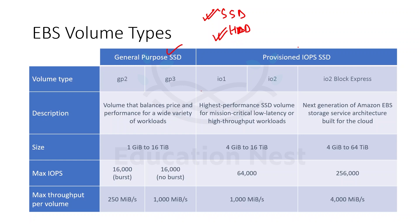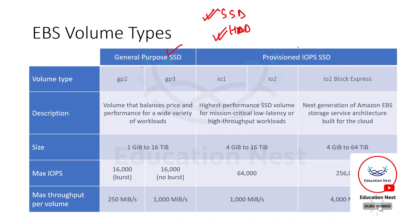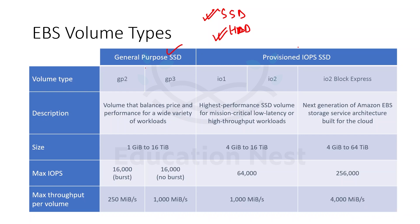Under SSD we have general purpose and provisioned IOPS. When we go with general purpose SSD it will have a balance between price and performance. But if we want high throughput and high IOPS — IOPS means input output operations per second — SSD volumes are basically concerned about giving performance in terms of IOPS.